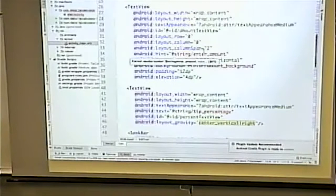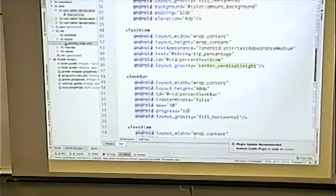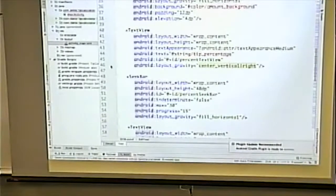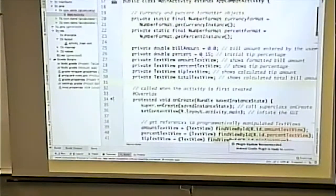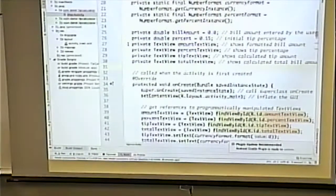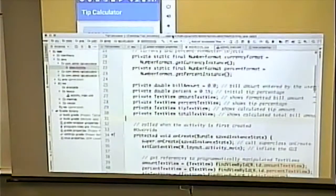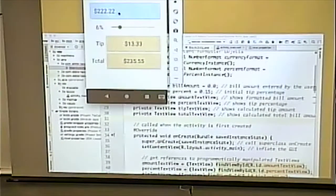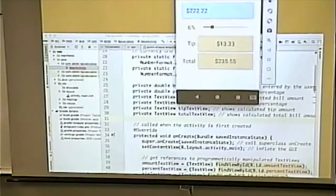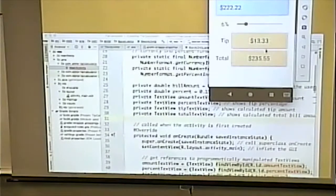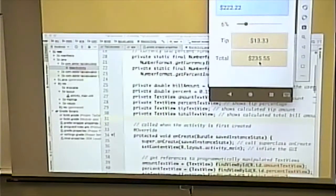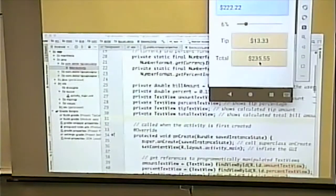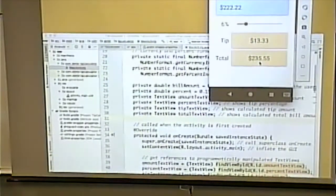So one thing I don't like about this code is it actually has that default percentage in two places. Alright? Then it defines these three different, I'm sorry, four different text views. Text view for the amount. Text view for the percentage and these two text views. It actually doesn't declare an instance variable for the enter text field, nor does it declare it for the slider. And we'll see why it doesn't have to.